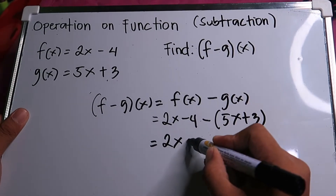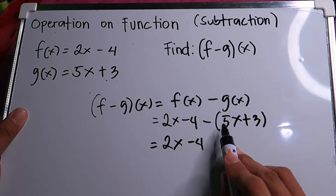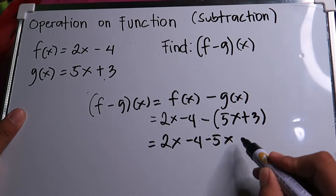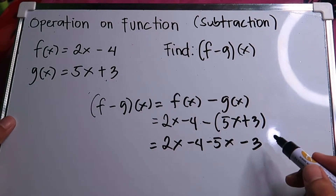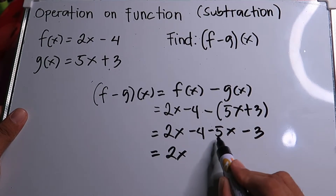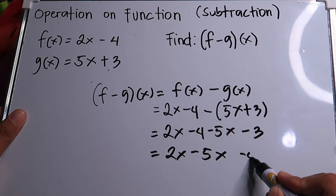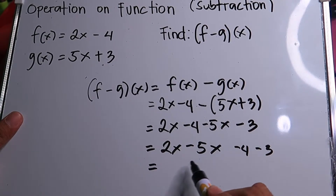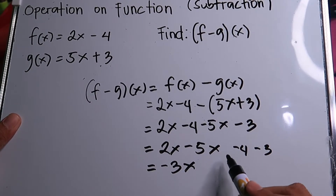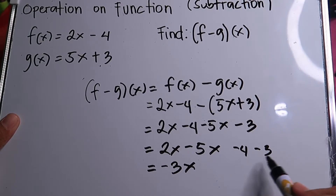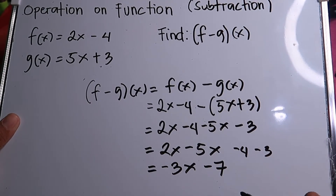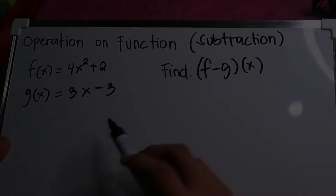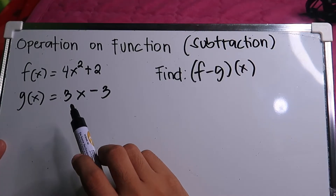We have 2x minus 4, then distribute the negative: negative times positive 5x gives negative 5x, negative times positive 3 gives negative 3. Now combine like terms: 2x minus 5x is negative 3x, and negative 4 minus 3 — they have the same sign — gives negative 7. The final answer is negative 3x minus 7.